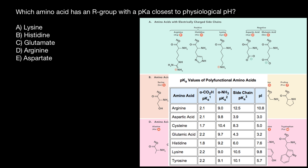So now we can choose the correct answer. The question asks which amino acid has an R group with a pKa closest to physiological pH. Histidine is unique among the 20 amino acids because it can act as a regulatory amino acid, forming or breaking ionic bonds with negatively charged R groups. Subscribe and see you in the next video. Goodbye.